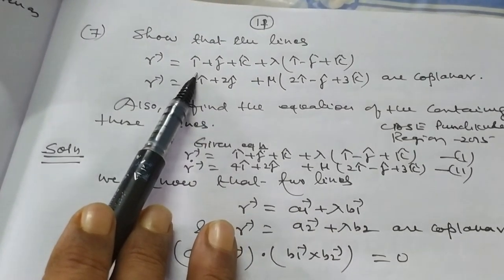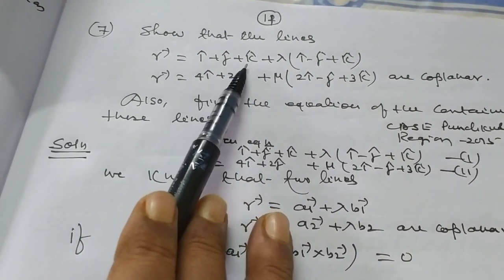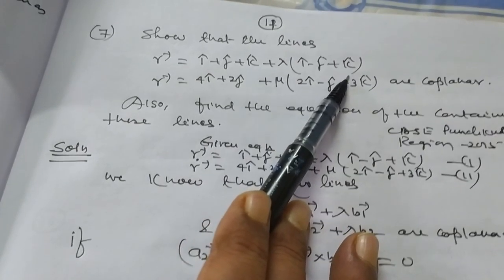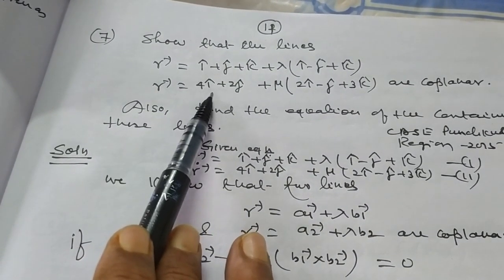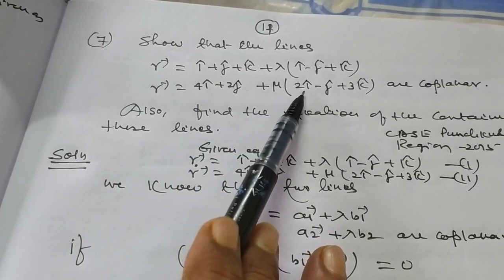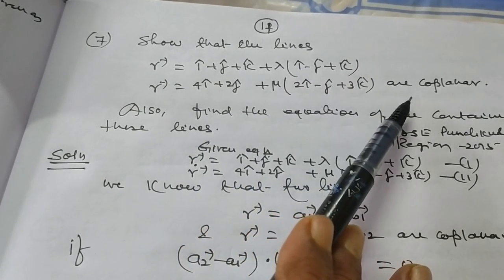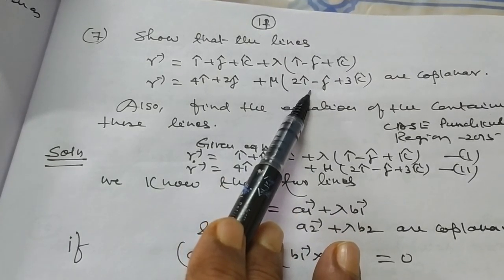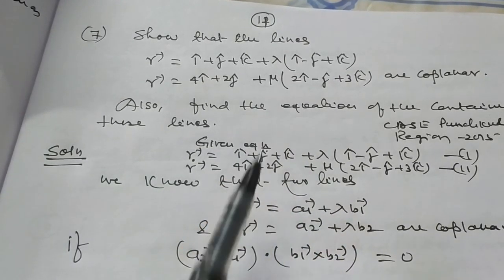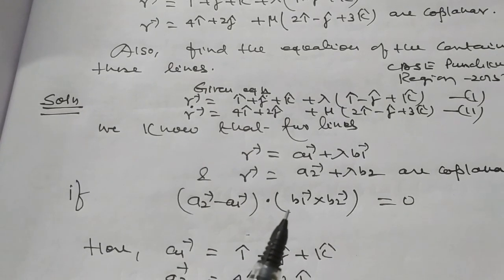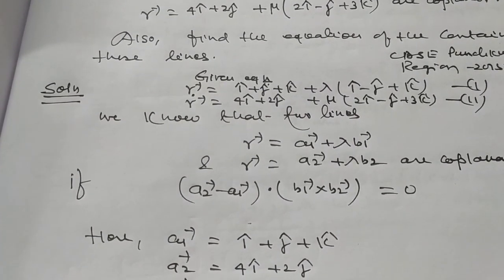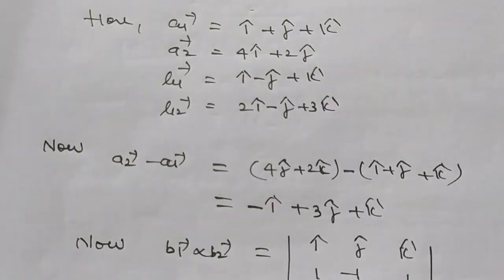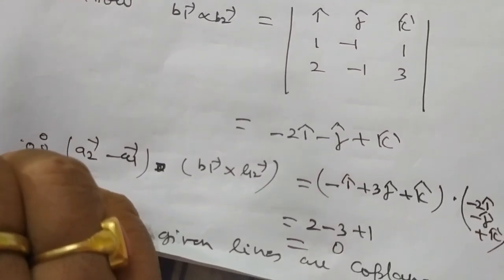Another board question: show that the lines vector r = i + j + k + lambda(i - j + k) and vector r = 4i + 2j + mu(2i - j + 3k) are coplanar. Since these are not parallel, what do we do? We check: (a2 - a1) dot (b1 cross b2). This is the shortest distance. So this is the shortest distance condition to test if lines are coplanar.